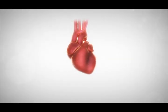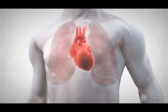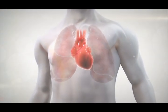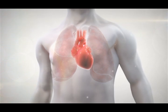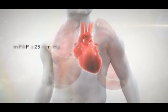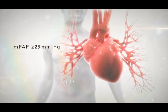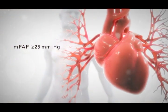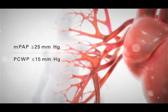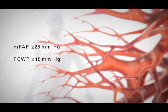Pulmonary Arterial Hypertension, or PAH, is a rapidly progressing disease of the pulmonary vasculature. PAH is defined hemodynamically as a mean pulmonary arterial pressure of greater than or equal to 25 mmHg and pulmonary capillary wedge pressure of 15 mmHg or less.